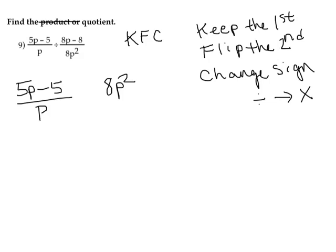I'm going to flip the second fraction which gives me 8p² over (8p-8). So now what I'm going to do is change the sign from division to multiplication, and then I'm going to factor each of the parts individually.